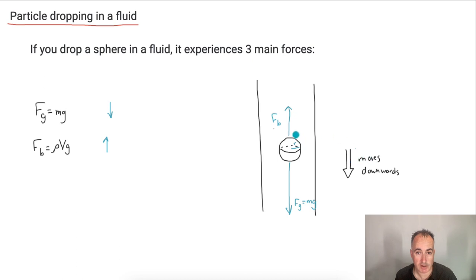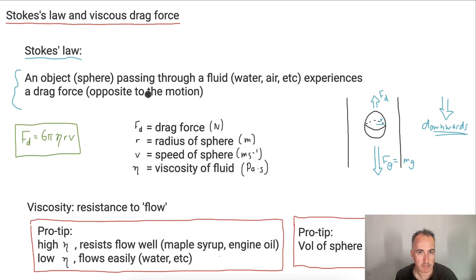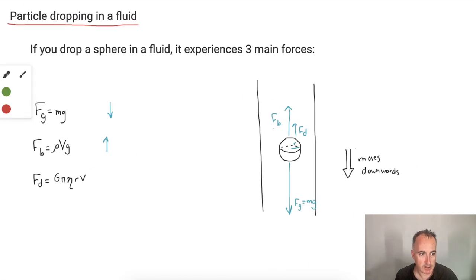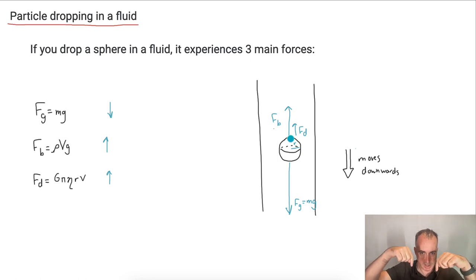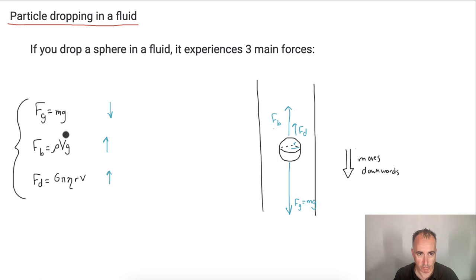The drag force — Stokes' Law — is 6π times eta times R times V, and it's also acting upwards. So it may be a matter of equating these forces. For example, if something is falling at a constant speed, the two upward forces have to add up to the downward force. If it's accelerating downwards, you can figure that out. It's all about these forces. It's important to account for them depending on the situation.